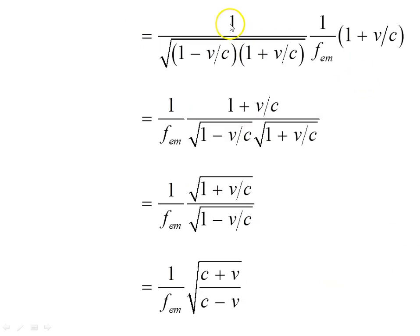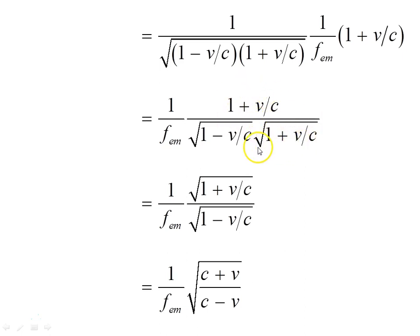We write the Lorentz factor gamma as 1 over the square root of (1 - V/C)(1 + V/C) — the difference of perfect squares under the radical — times 1 over F emitted, times (1 + V/C). Bringing (1 + V/C) into the numerator and splitting the radical, one factor of square root of (1 + V/C) cancels, leaving 1 over F emitted times the square root of (C + V)/(C - V).